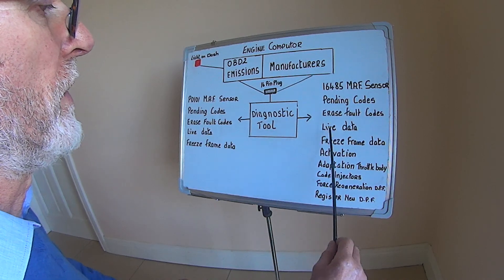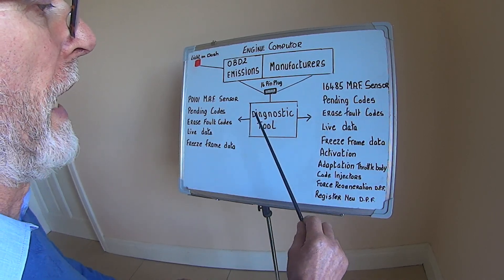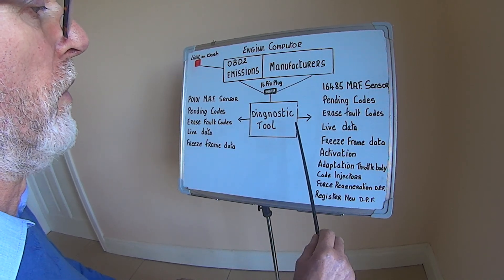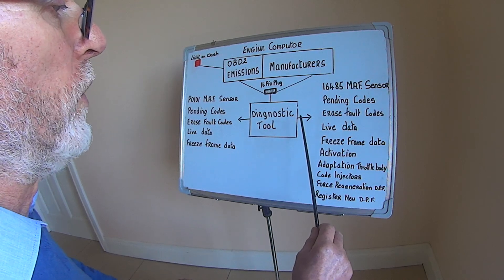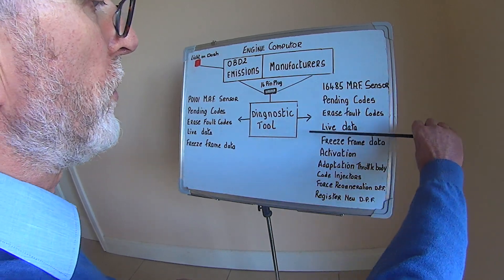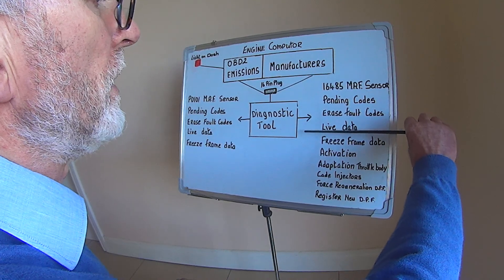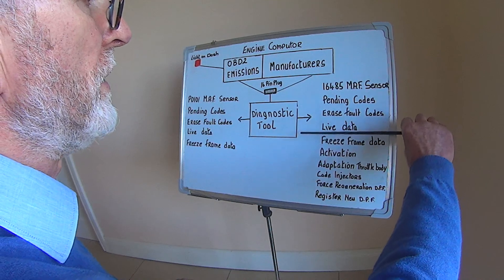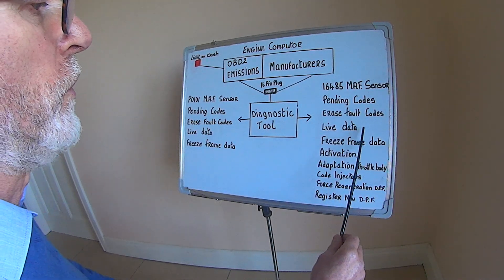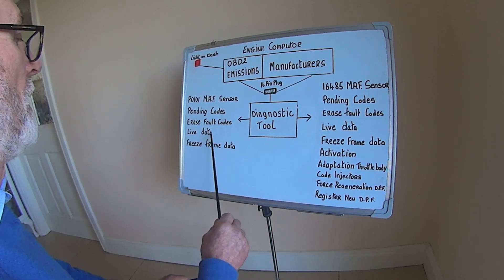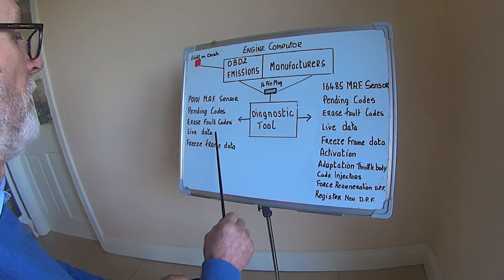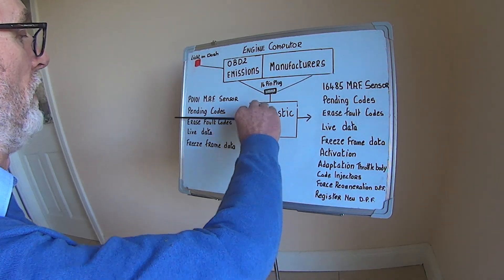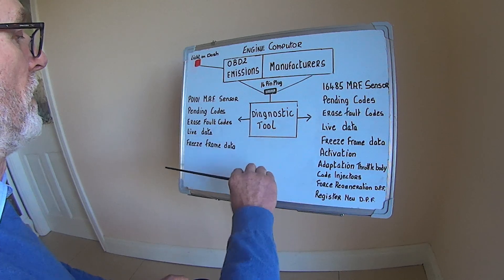Let's say the mass air flow sensor is faulty and the engine computer can't get any information from it. What it will do is look at the other sensors on the engine and use those to create a substituted value. You will see the grams per second — when you rev the engine, they will go up and they will go down, but this is a substituted value. To see the true value, you have to go back to the live data on OBD2, and when you go in there, you'll probably see that the mass air flow sensor is stuck at 2 grams — when you rev it, it won't go up and it won't go down. There's a fault in the system.